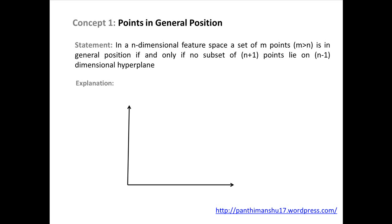Let's take an example. In this example, we are taking two-dimensional space, so n equals 2. Suppose we are taking four points, so m equals 4. Also, m is greater than n. Now, these points are in general position because no subset of n plus 1 points, which equals 3, lie on n minus 1, which equals 1 dimensional hyperplane.